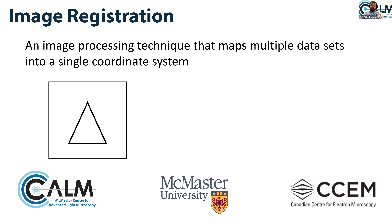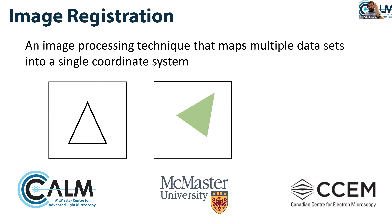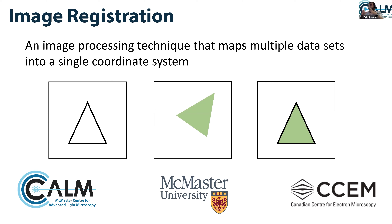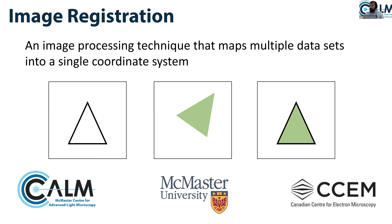Let's say we have a triangle at the first time point, then it turns towards the right. Because the object did not change in shape, we want to compensate for this drift, and we do image registration to achieve that. There are many transformation models commonly used for image registration that we'll be talking about today: translation, affine, rotation — we'll try to give you a quick introduction in the next slides.